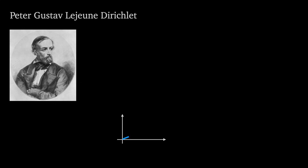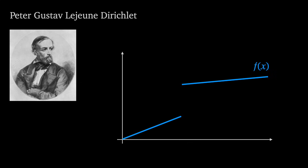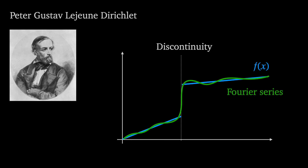So just to recap for some context: in the 1820s, Dirichlet was thinking about what happens to Fourier series at discontinuities. Fourier series — this idea that an infinite sum of trigonometric functions converges to a function — was only about 15 years old at the time. And what happened at points where functions jumped up and down wasn't clear.